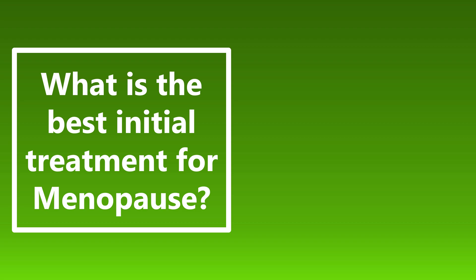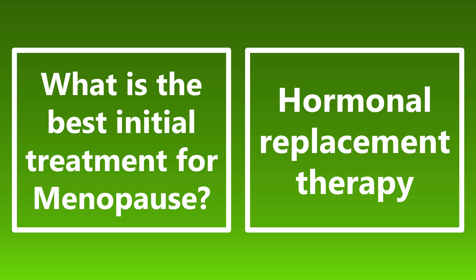What is the best initial treatment for menopause? With Step 2CK, there is more emphasis on knowing the gold standard of treatment and first-line treatment. The best initial treatment for menopause is hormonal replacement therapy — typically a combination of estrogen and progestin, generally indicated for symptomatic patients who are less than 60 years old without contraindication.